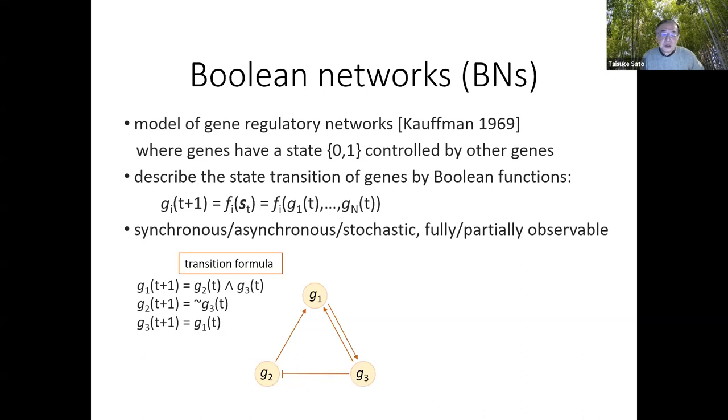Boolean networks are a model of gene regulatory networks proposed many years ago, in which genes have a state zero, inactive state, and state one, active state. They are controlling each other. The Boolean networks describe the state transition of genes by Boolean functions, and the next state of gene i is determined by Boolean function fi applied to the current state of genes one to gn. There are several types of Boolean networks, but we choose the simplest one: synchronous, fully observable Boolean networks.